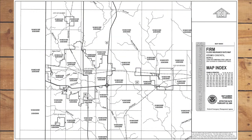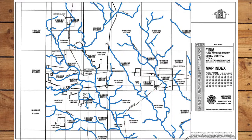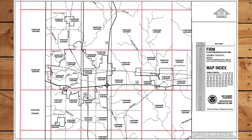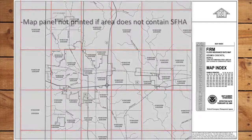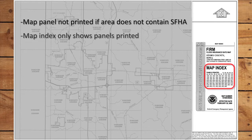Whenever a community requires more than one panel, a map index is prepared. The map index shows the community's boundaries, transportation infrastructure such as streets, highways, and railroads, and water bodies such as streams and lakes. If the community's FIRM includes more than one panel, the map index will show how the community is divided into those panels. FEMA does not print a map panel for portions of the community that do not contain a special flood hazard area. The map index will indicate which panels are printed.